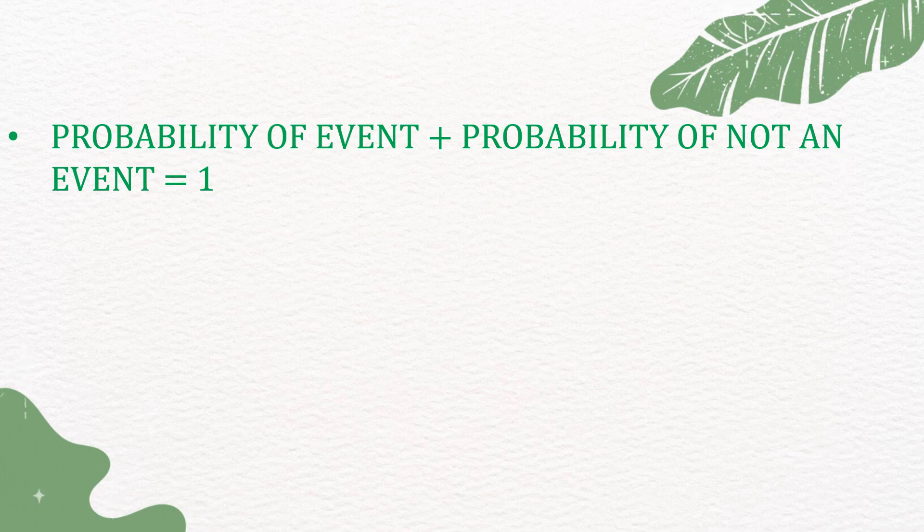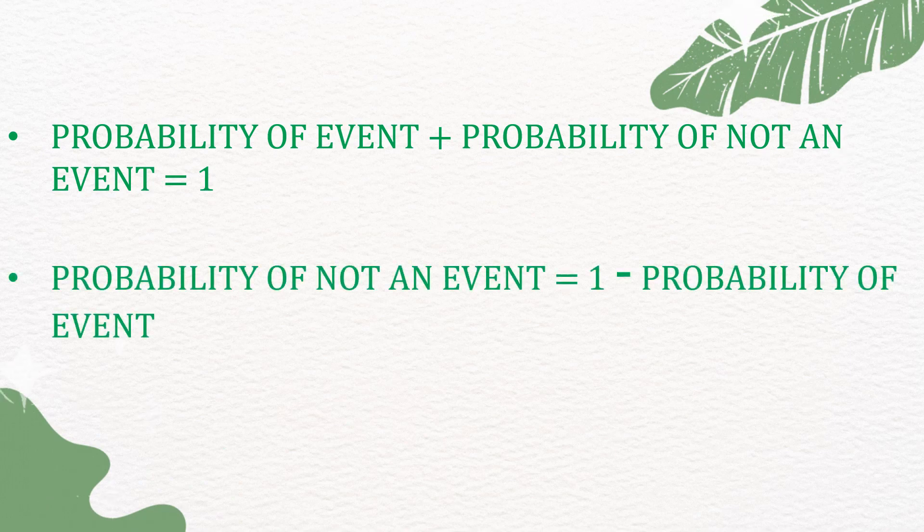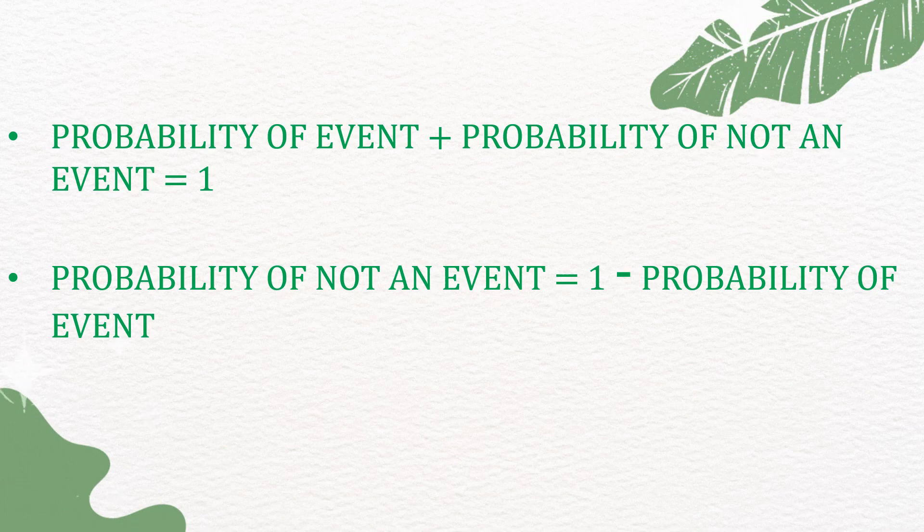Probability of an event plus probability of not an event is equal to 1. Probability of not an event is equal to 1 minus probability of an event.